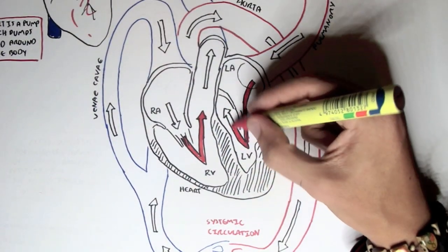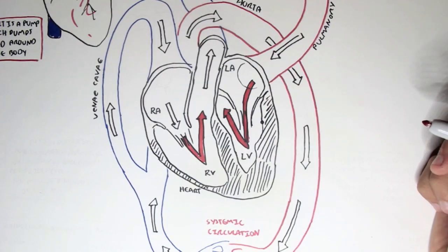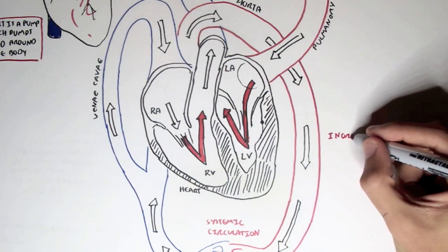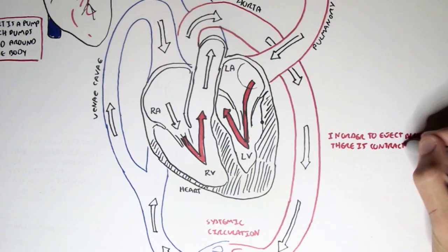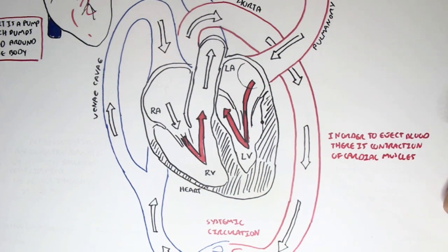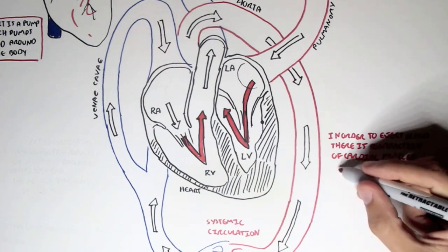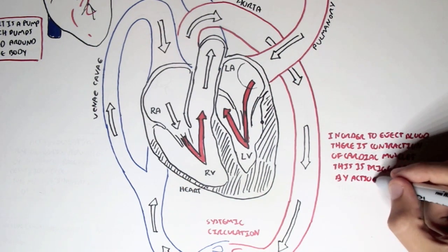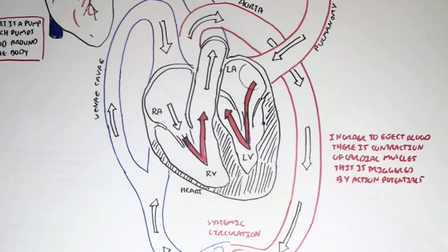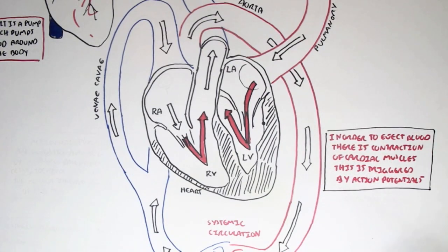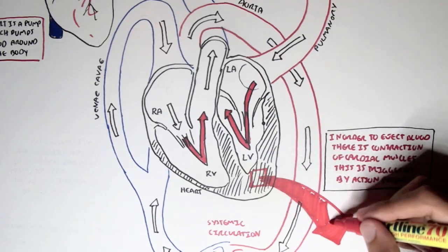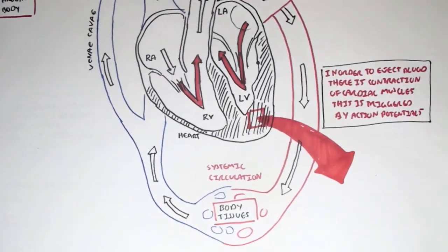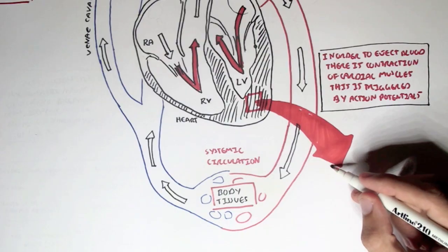In order for the heart to eject blood or pump blood out, there is contraction of cardiac muscles, and this is triggered by action potentials. So let's have a look at the cardiac muscle cells. The cardiac muscle cells are different from the smooth muscles or the skeletal muscles, but they do have some similarities.